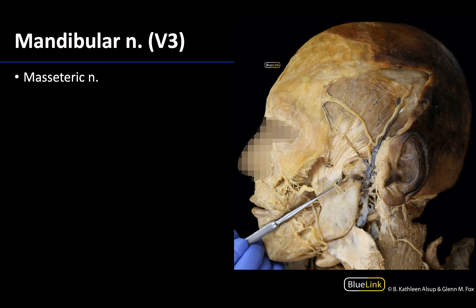Let's start with the masseteric nerve. As you probably would guess, it is going to innervate the masseter muscle. You can see the masseteric nerve and the artery here — they are traveling over the mandibular notch between the coronoid process and the condylar process, heading to innervate the deep surface of the masseter muscle, which has been reflected in this particular dissection.